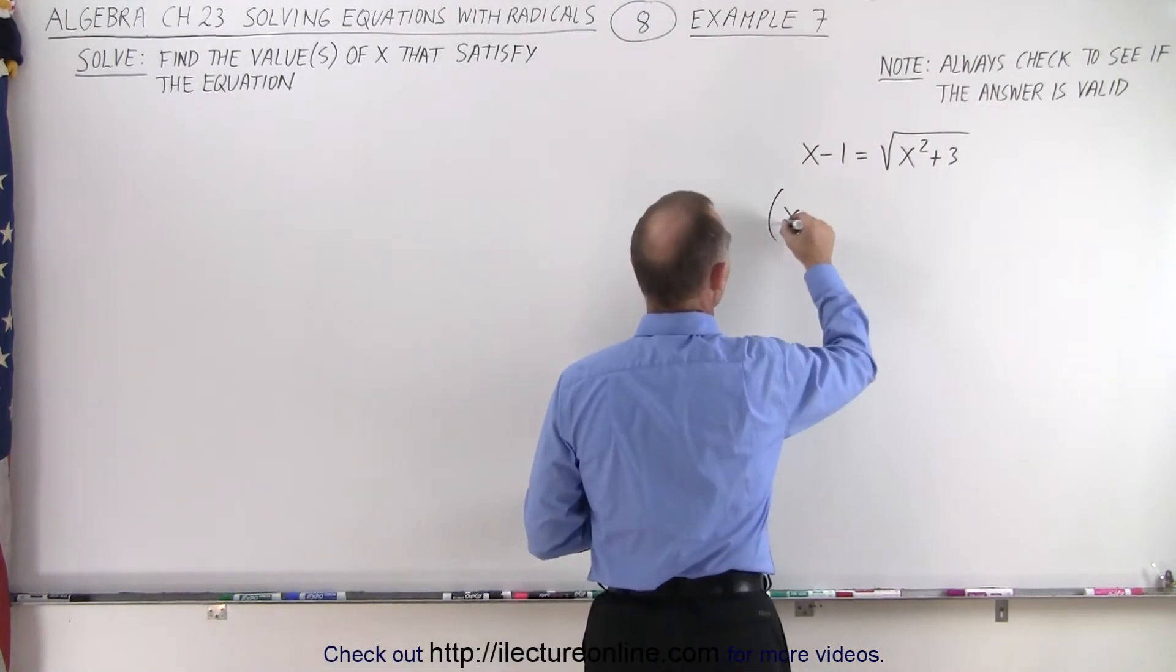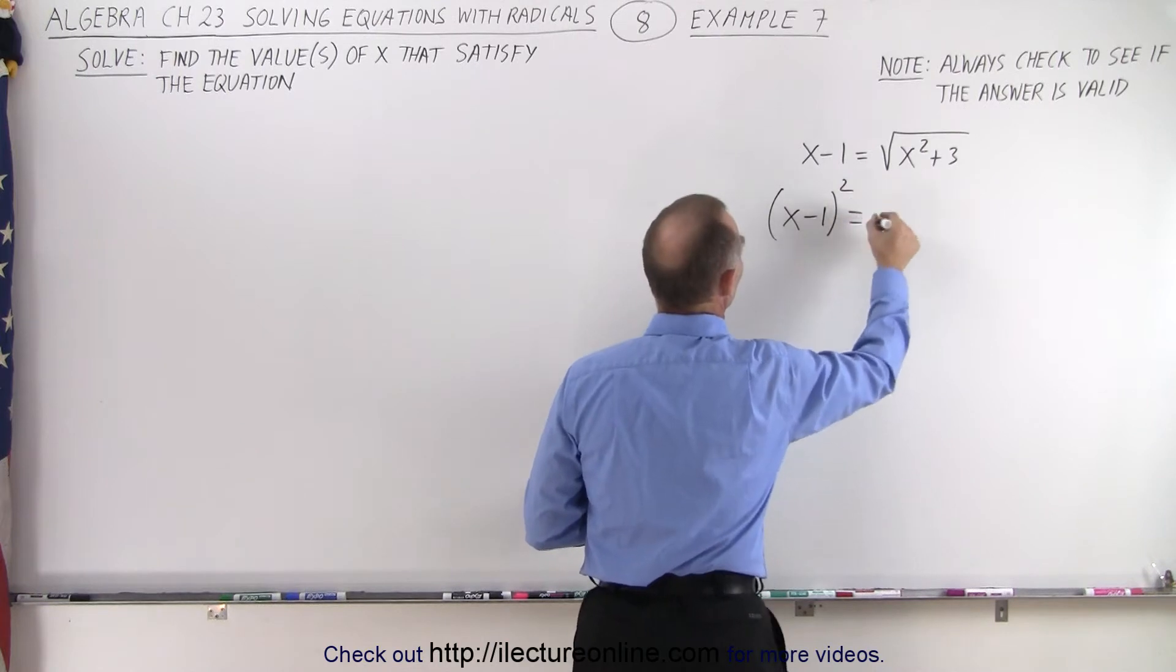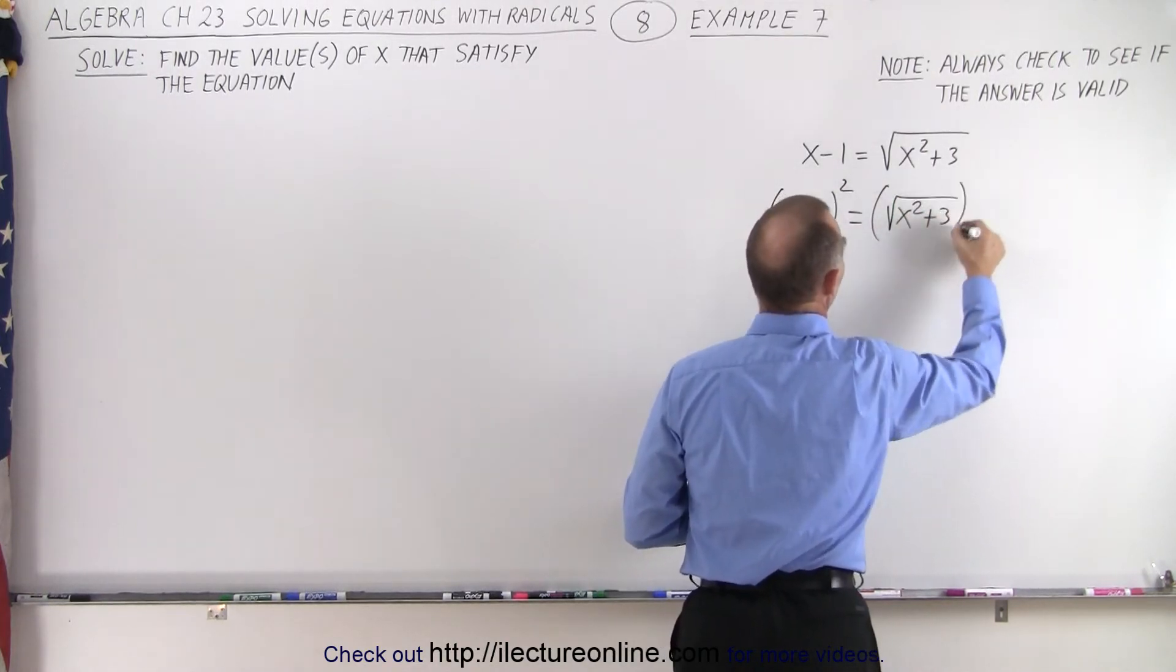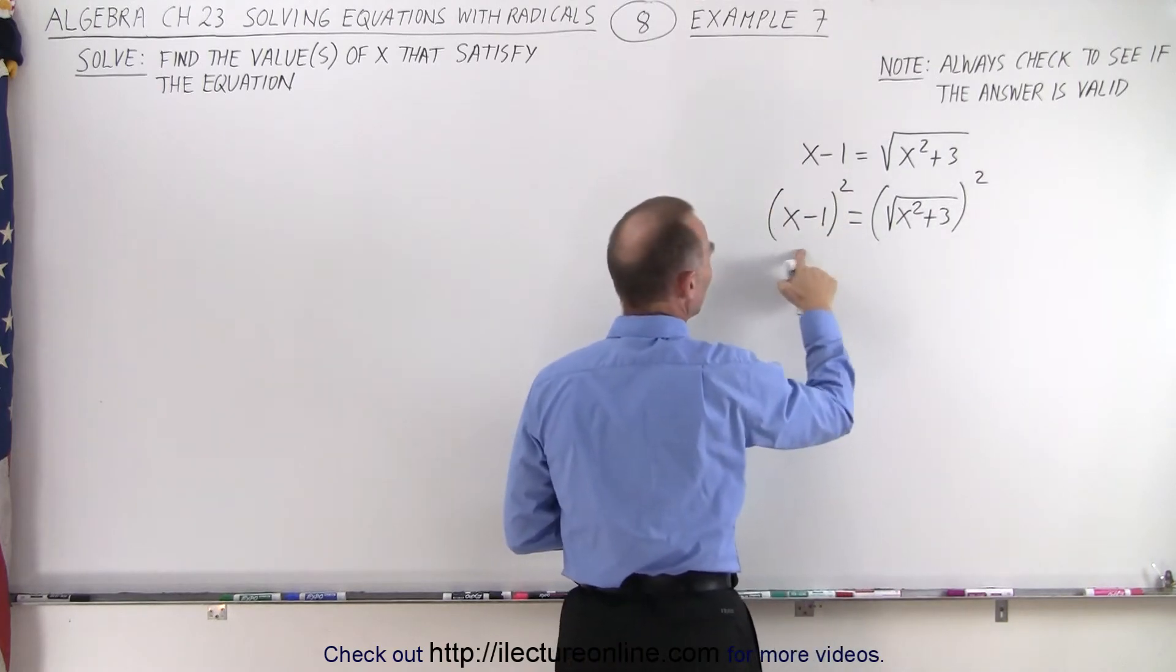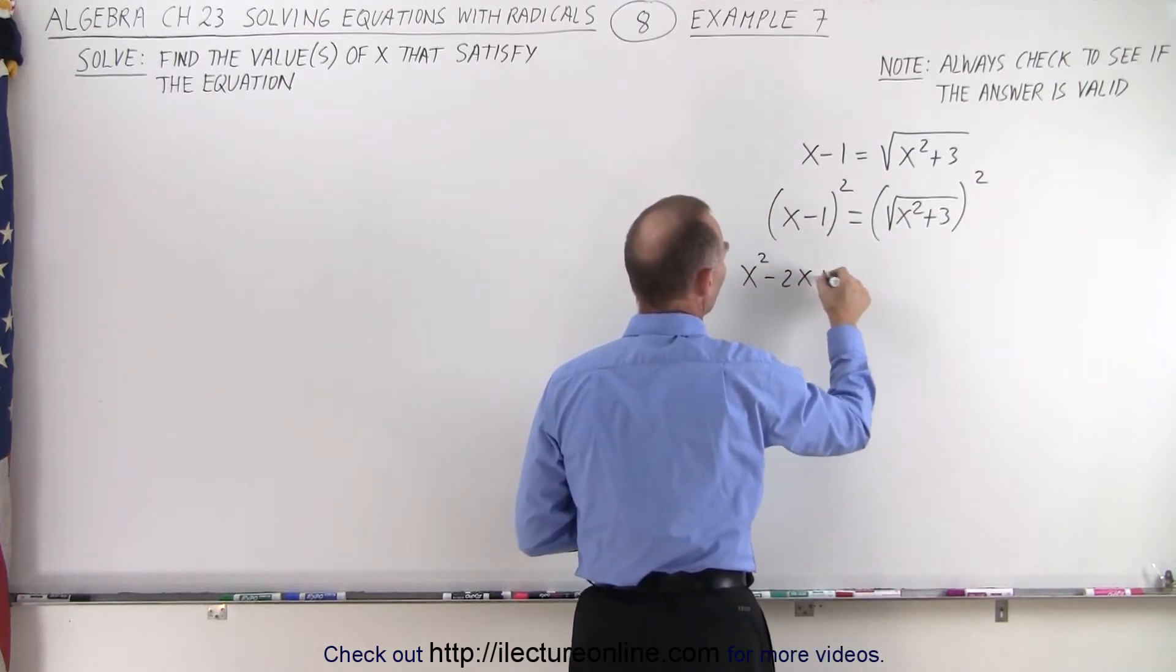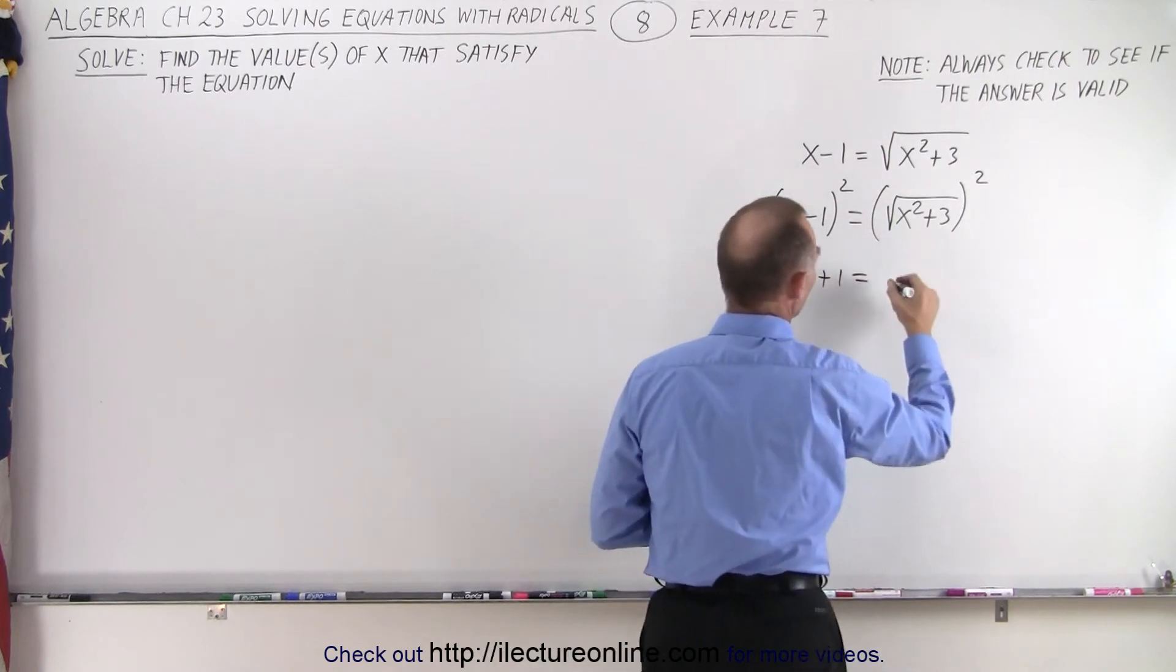We take the left side and we square it, and we take the right side and we square it. So, on the left side, when we square this, we get x squared minus 2x plus 1 equals, on the right side, we get x squared plus 3.